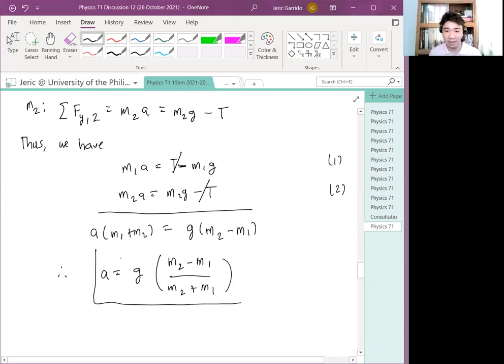So this is the acceleration of the system. Now, this is correct. Because I want my M2 to fall, to accelerate downward. M2 should be greater than M1. M2 should be heavier than M1. Because otherwise, this becomes negative. And therefore, our assumption on the direction of the acceleration is wrong. Hence, the direction of the acceleration will reverse. That's why if M1 is greater than M2, A will be less than 0. Therefore, the direction reverses.